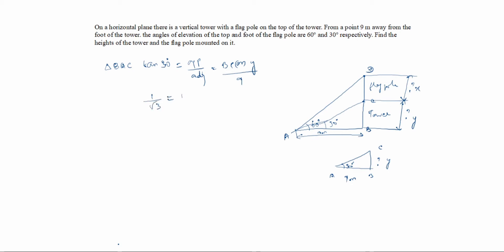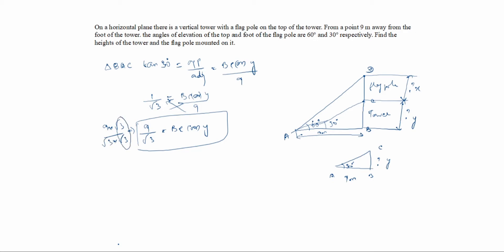So tan 30° = y/9, and since tan 30° = 1/√3, we get 1/√3 = y/9, which gives y = 9/√3. Rationalizing: 9×√3 divided by √3×√3 = 9√3/3 = 3√3. So BC or y equals 3√3 meters. Now we have calculated the y value, and next we need to calculate the x value.